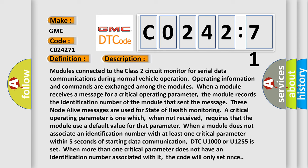DTC U1000 or U1255 is set. When more than one critical parameter does not have an identification number associated with it, the code will only set once.